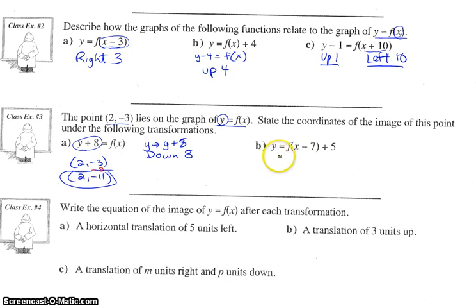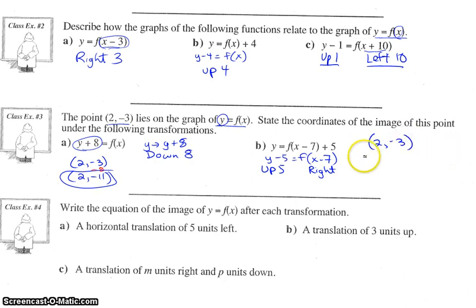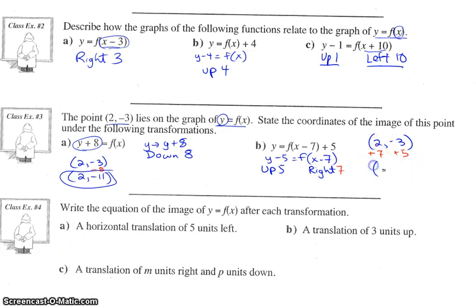For part b, I'm going to move the five over with the y so I can write what my translations are. This should be a movement of up five and right seven. Moving the point two comma negative three — up five means adding five to the y value; right seven means adding seven to the x coordinate. That results in a point of nine comma two.